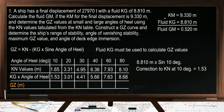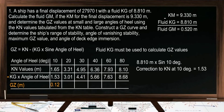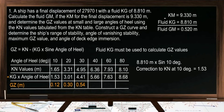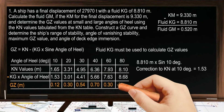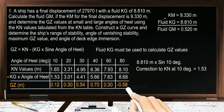To find the GZ value, subtract the correction to KN from the KN value. At 10° the GZ value is 0.12 m; at 20°, 0.30 m; at 30°, 0.54 m; at 40°, 0.70 m; at 60°, 0.30 m; and at 80°, −0.58 m. These are the GZ values needed to construct the GZ curve to determine the range of stability and to find at what angle of heel a ship will capsize.